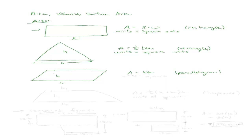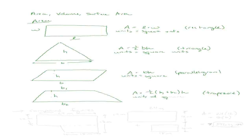Then we have a trapezoid, which is a little different from a parallelogram. A trapezoid has the top and bottom parallel, but the sides are not. In that case we have two bases: base 1 is the top and base 2 is the bottom. The height is the distance from the top base to the bottom base. The area of a trapezoid is one-half times (base 1 plus base 2) times the height, and the units are square units.